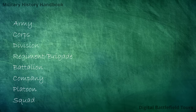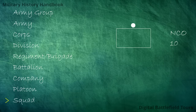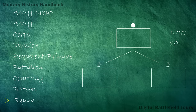Starting at the bottom with the smallest unit: the squad. A good rule of thumb is that a squad needs to be big enough to have a tactical impact on its own, but small enough to be led by a single commander. A general size for a squad is around 10 men. The commander is usually a non-commissioned officer or at times a senior enlisted man. The squad itself is actually made up of smaller units, often called teams or groups, but for the purposes of this video we will take the squad as a single unit.